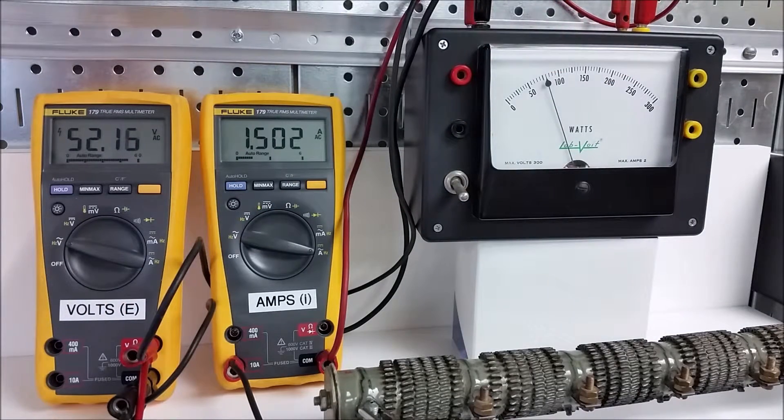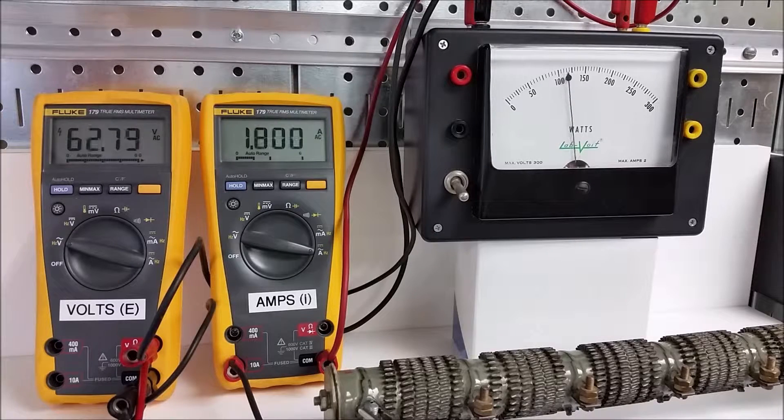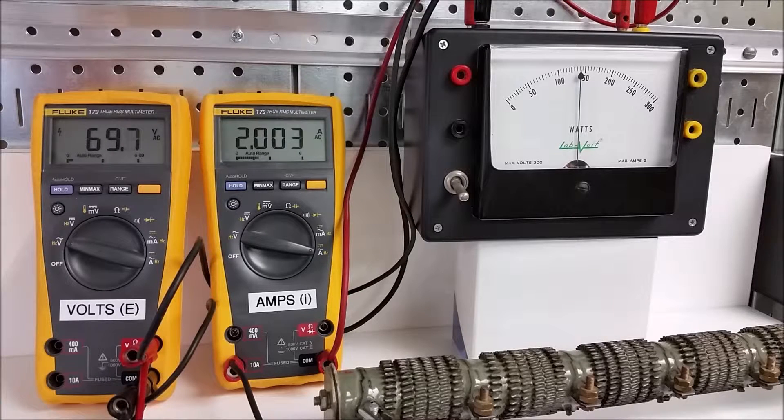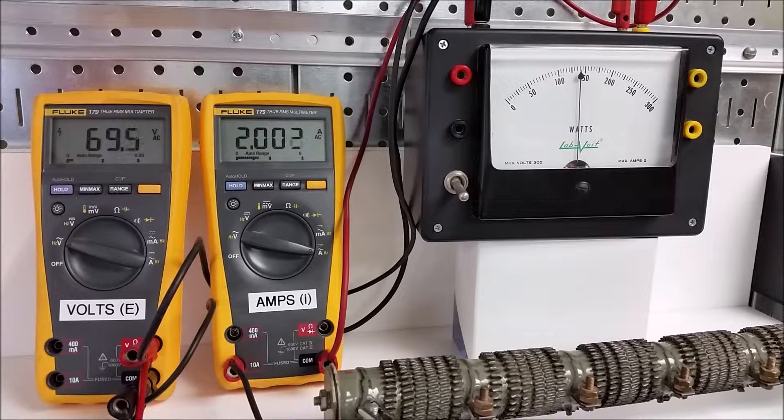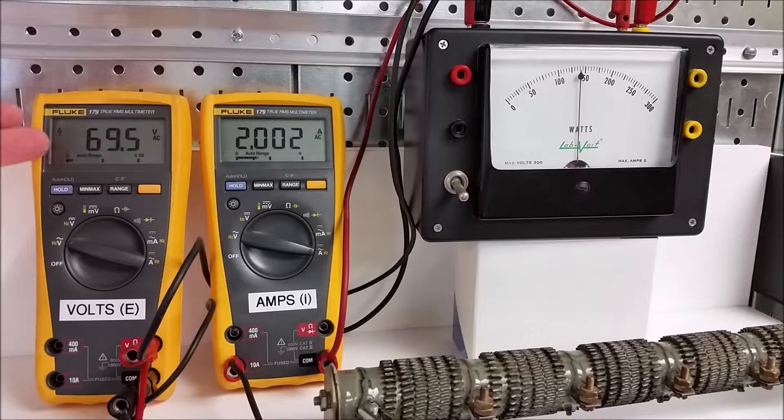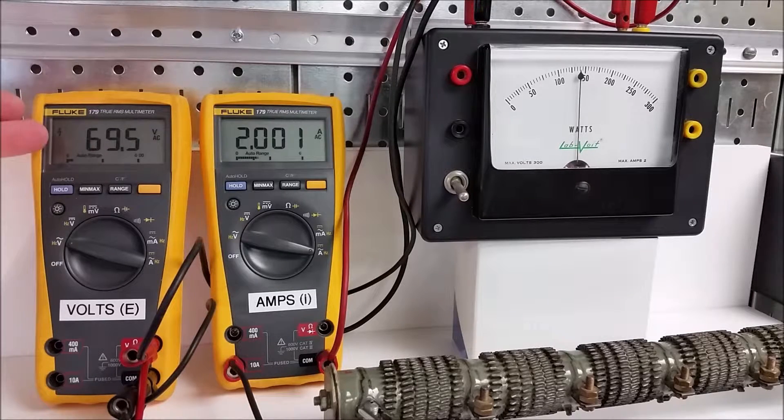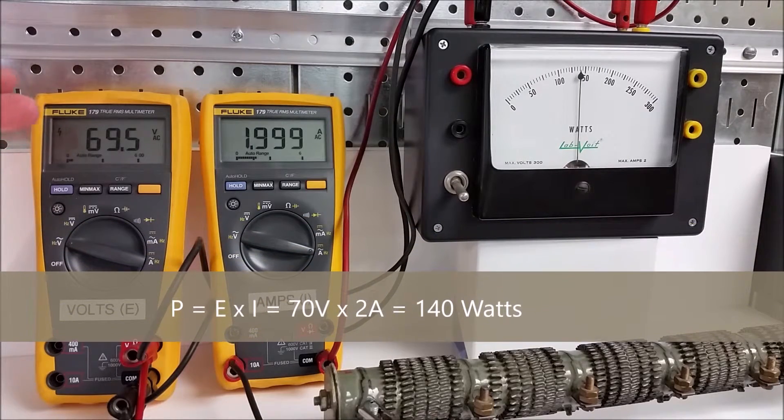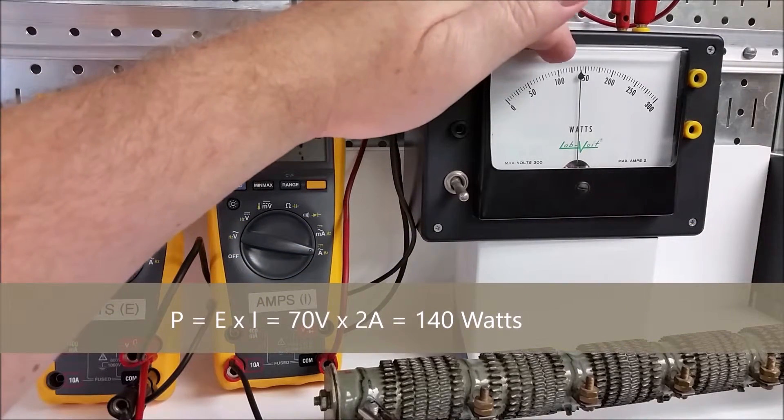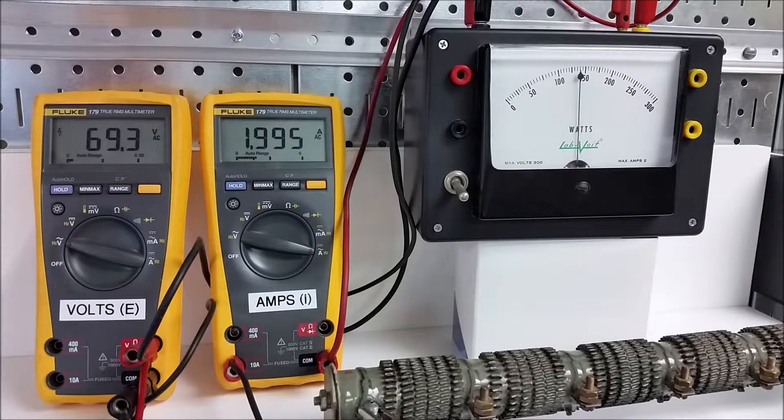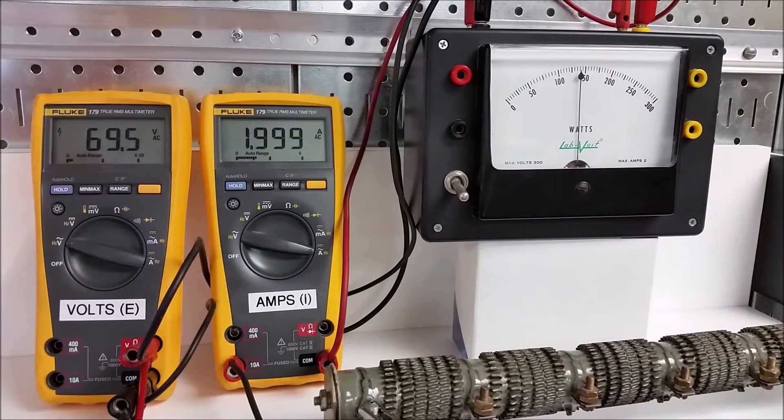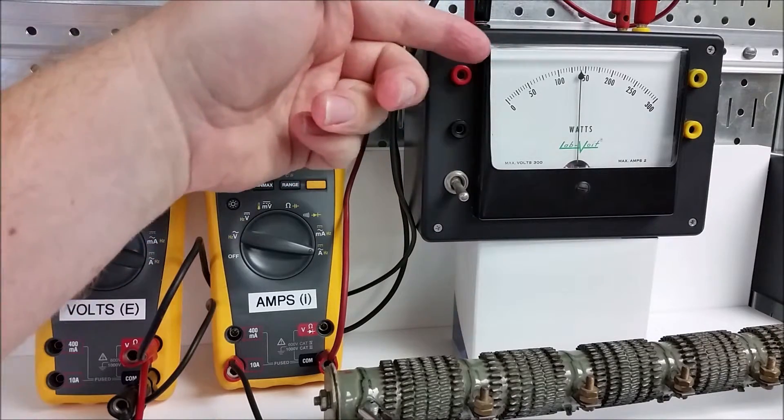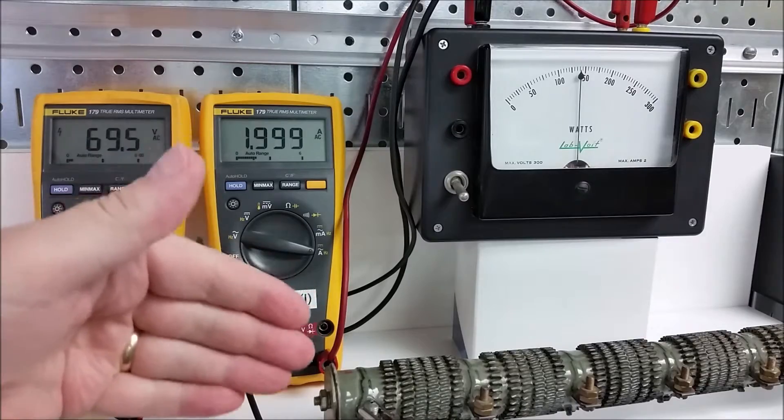Let's pick it up to 2 amps. Raise our voltage again until we reach a current of 2 amps. And at 2 amps, we're just a shade under 70 volts, 69.5 volts. 2 times 70 is 140. And looking at our watt meter, it's registering right around 140. And so we could say that volts times amps equals watts or true power. And that is going to be true of all purely resistive circuits.